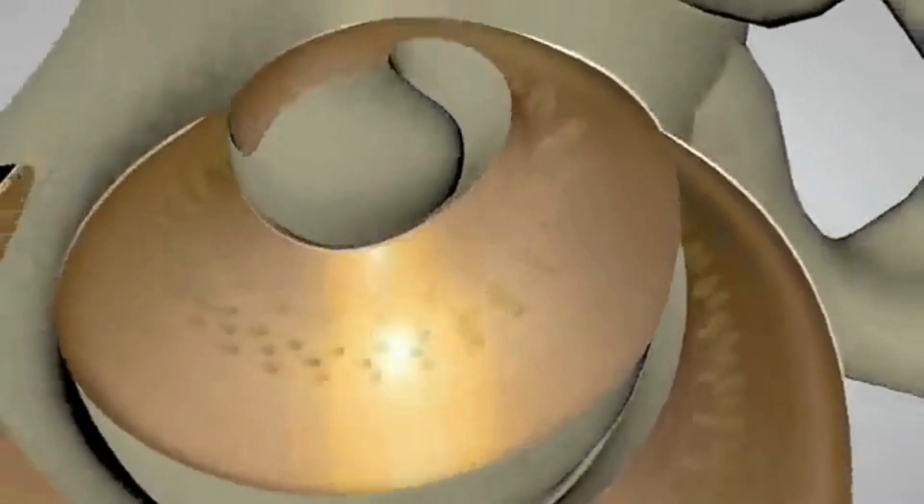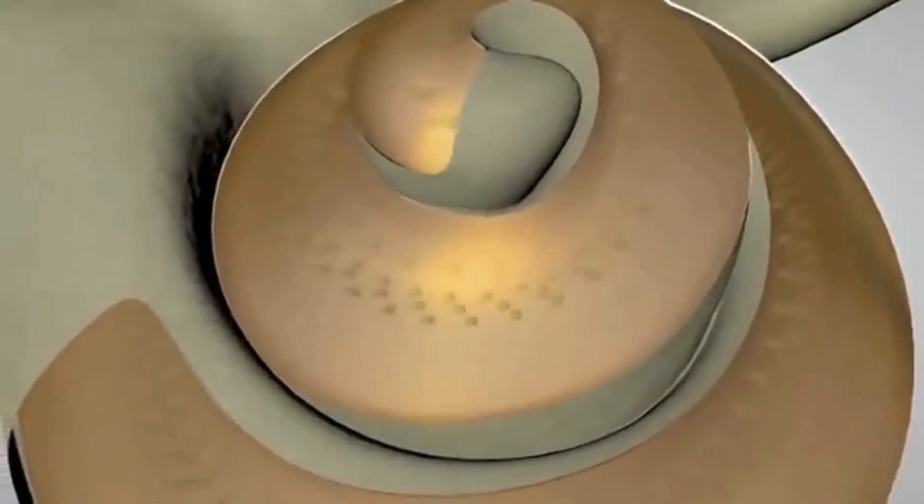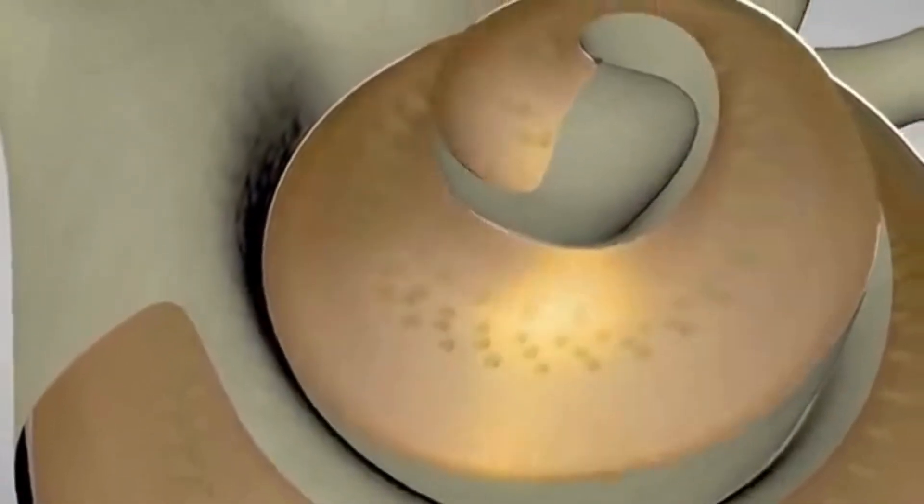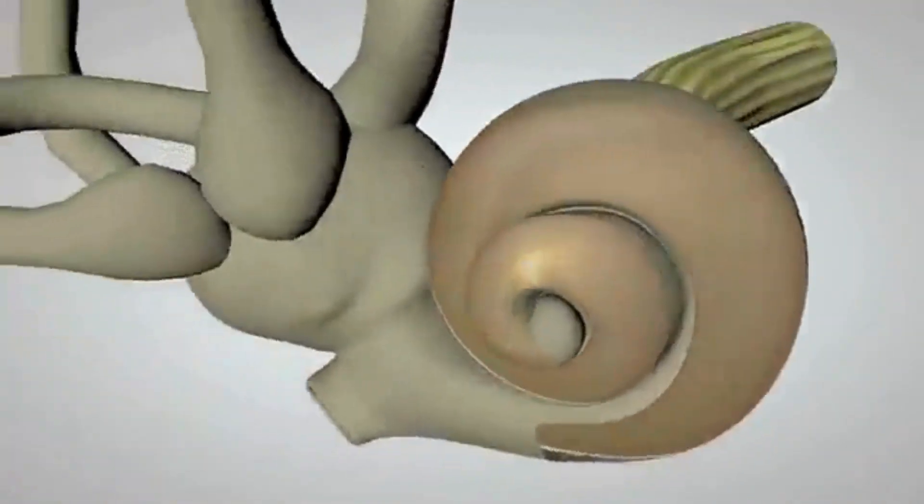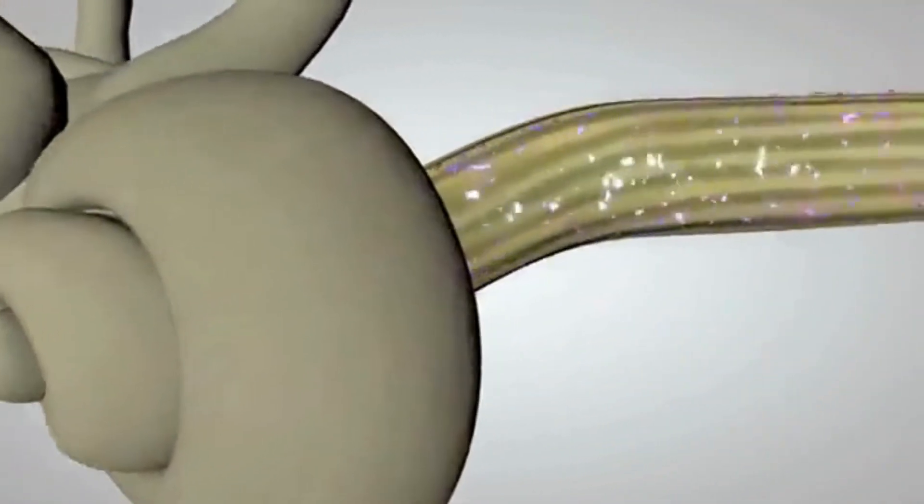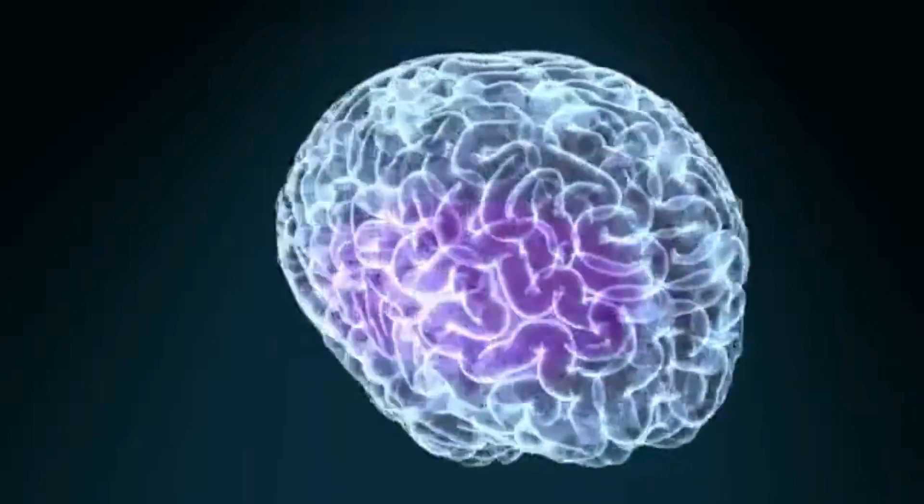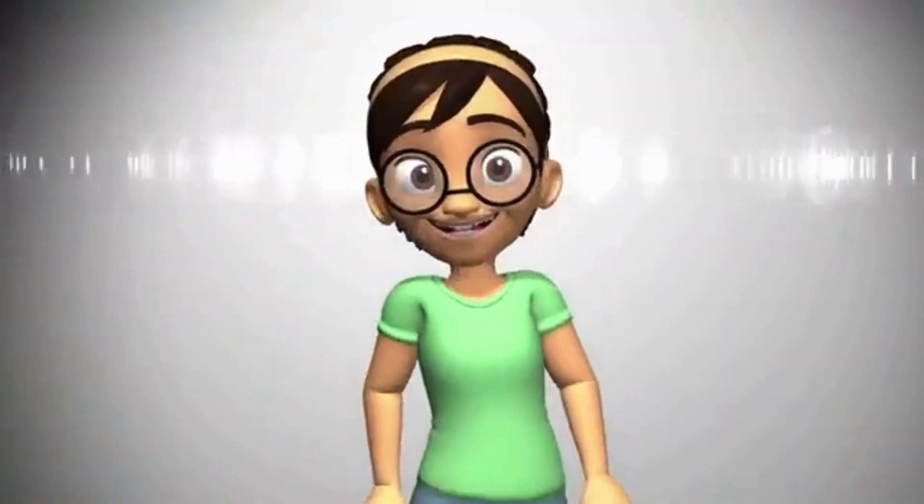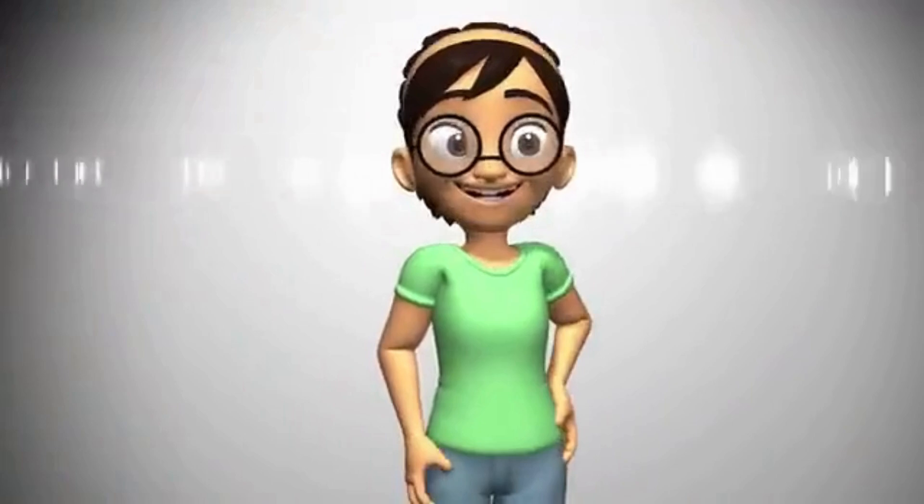At the very top or apex of the spiral, the hair cells detect the lowest-pitched sounds, such as a tuba. The auditory nerve carries the electrical signal to the brain, which interprets the messages as sounds that we recognize and understand.